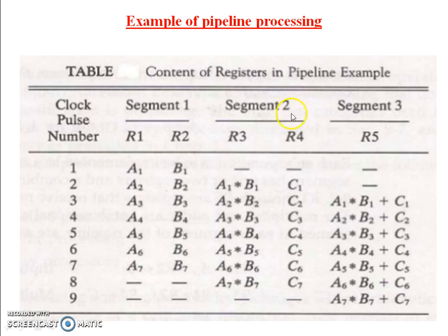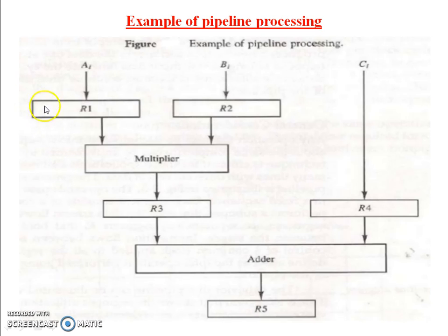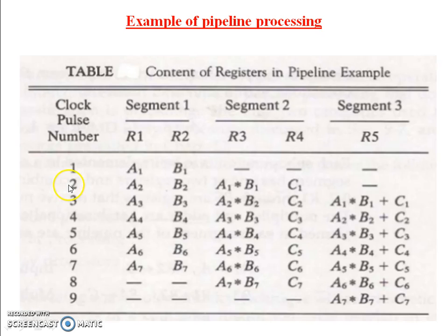The table for this pipeline processing shows: first, A1 and B1 are inputs stored in R1 and R2 (segment 1). At that time, R3 and R4 (segment 2) are null, and R5 (segment 3) is also null. This is segment 1, segment 2, and R5 is segment 3. When A1 and B1 are inserted into R1 and R2, R3, R4, and R5 are null.